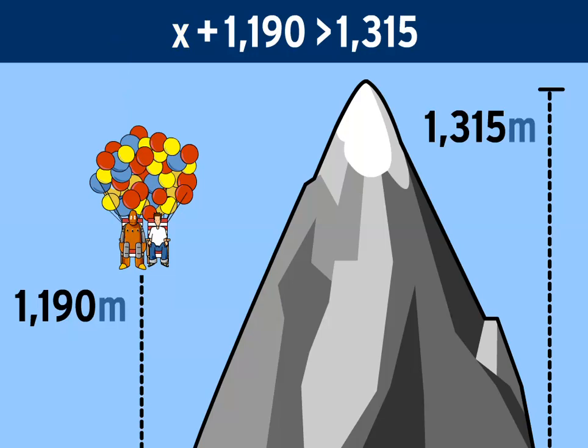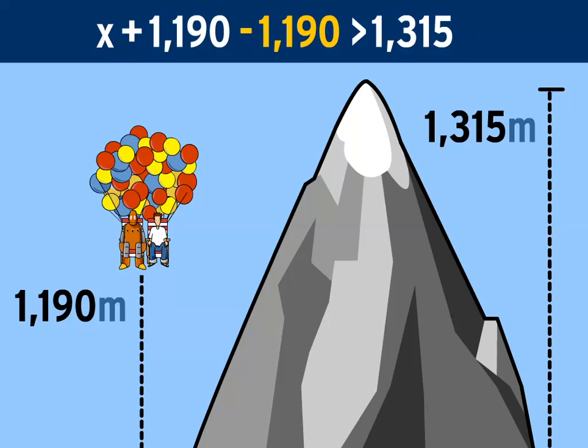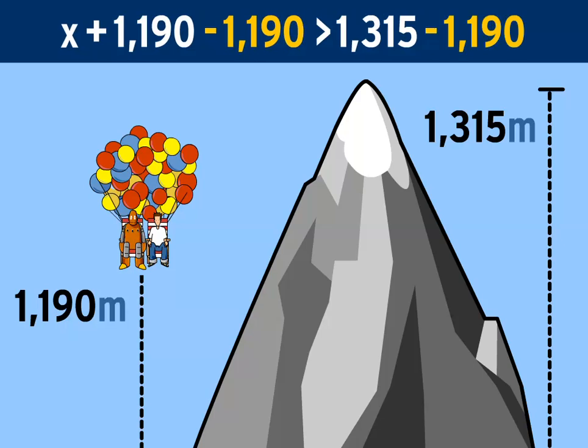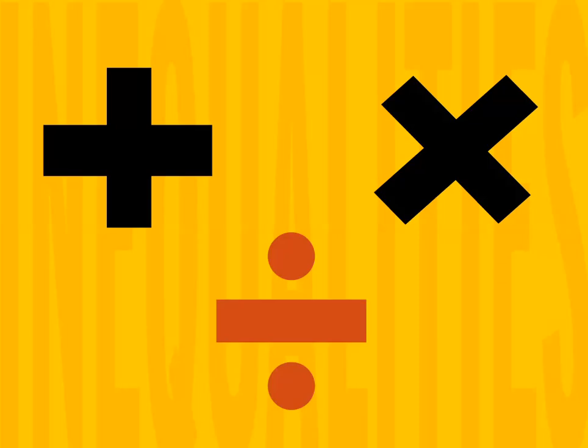In our case, that means subtracting 1,190 from the left side of the formula. But like in an equation, whatever you do to one side, you have to do to the other. You can do the same kind of thing with addition, multiplication, or division, depending on the problem.